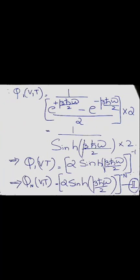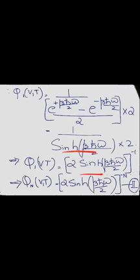To express Q1(V,T) in the sinh form, we divide numerator and denominator by 2, giving Q1(V,T) = 1 divided by [(e raised to beta h-bar omega over 2 minus e raised to minus beta h-bar omega over 2) over 2], which equals [2 sinh(beta h-bar omega over 2)] raised to minus 1. The partition function for the entire system in this alternate form is Q(N,V,T) = [2 sinh(beta h-bar omega over 2)] raised to minus N. This is equation 2.